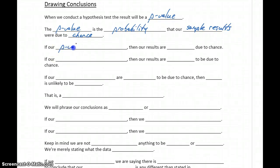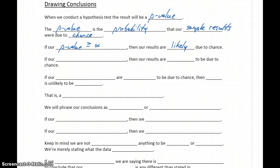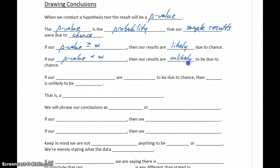If our p-value is greater than or equal to our alpha value — which is our significance level — then our results are likely to be due to chance, so there's no reason to throw out the null hypothesis. If our p-value ends up being something less than alpha, meaning we have a very small probability, then our results are unlikely to be due to chance, meaning there's evidence to throw out the null hypothesis.